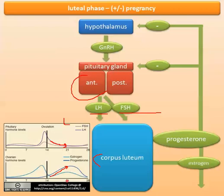So at some point in the luteal phase, LH and FSH aren't stimulating the corpus luteum enough to keep it growing, and it actually atrophies and goes away. That is reflected by the decrease in progesterone and estrogen. At the end of the luteal phase, progesterone and estrogen decrease to the point where menstruation occurs, which allows LH and FSH to increase — because they're not being inhibited as much anymore — and start to recruit the next set of follicles and go on into the next cycle. That's the no-pregnancy situation.